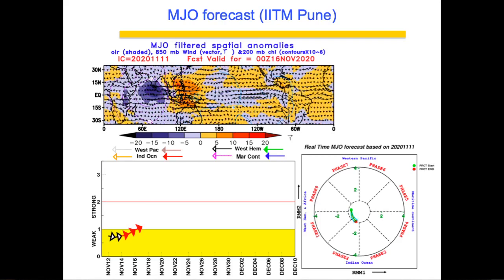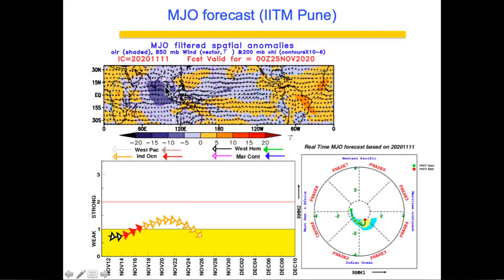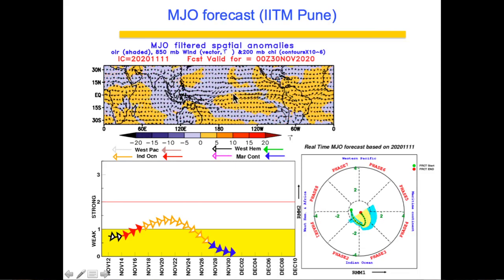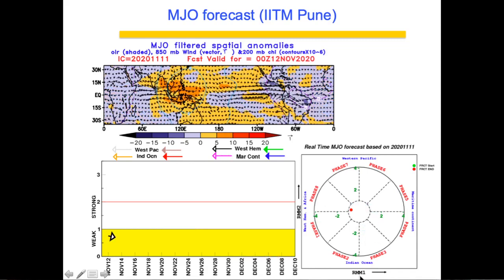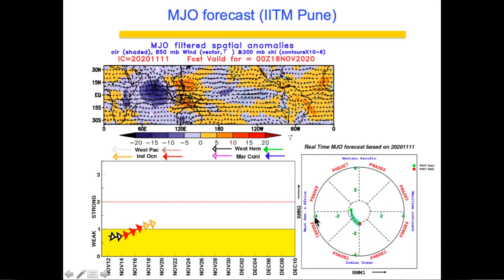How is MJO forecasted? It is forecasted in the form of a cloudiness pattern between different oceans — when it is blue it is in the active phase, and when it is red it is in the suppressed phase. It is also plotted in the form of a phase plot called RMM, which stands for Real Multivariate MJO Index. It is a phase plot between RMM1 and RMM2.